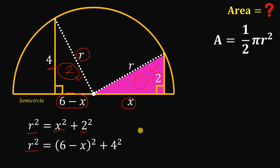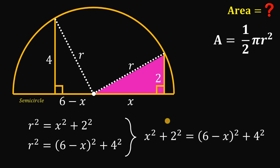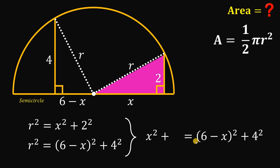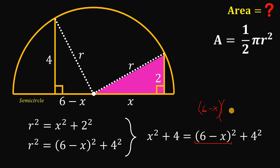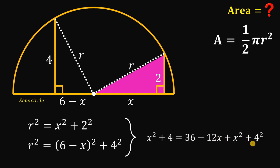Let's focus on these two equations. Take note that they are both equal to r squared, so we can say that x squared plus 2 squared must be equal to (6 minus x) squared plus 4 squared. Let's solve for x. First, simplify: 2 squared gives us 4. Expanding (6 minus x) squared gives us 36 minus 12x plus x squared, and 4 squared is 16.